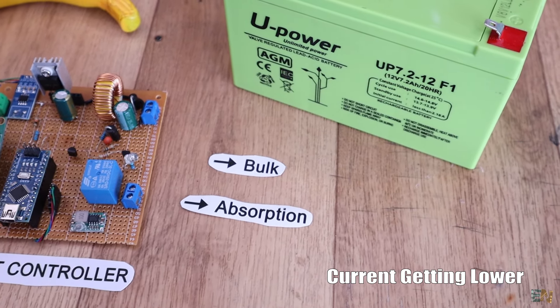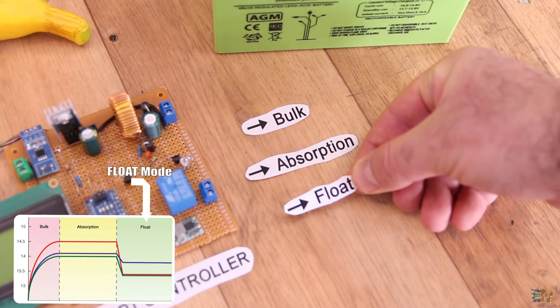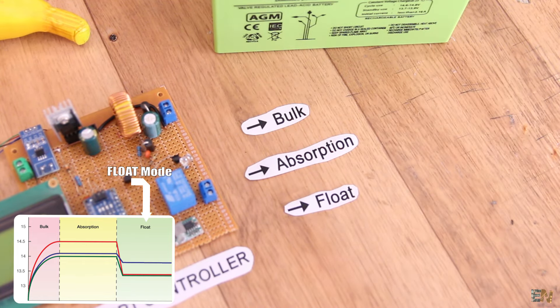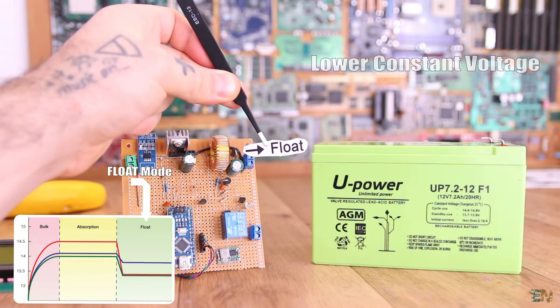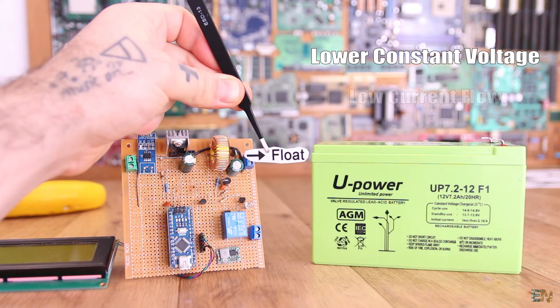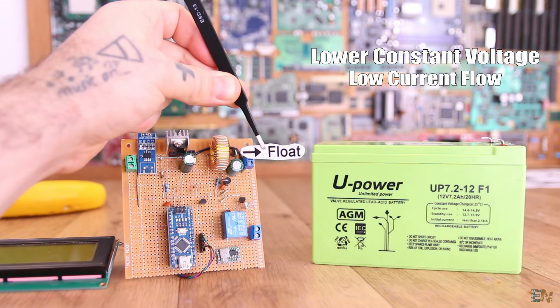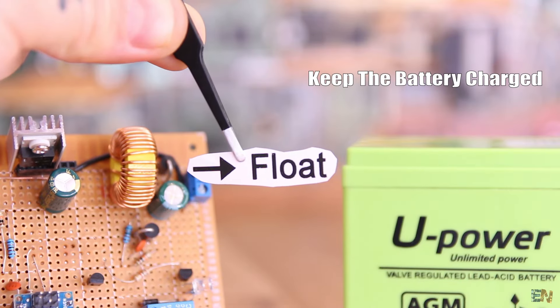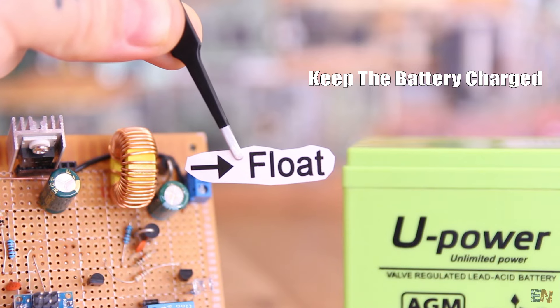When the current flow gets below a certain value, we enter the last stage which is called float mode. In this mode, the controller reduces the voltage to another preset value and keeps the current flow to less than 1% of the battery capacity. This will keep the battery fully charged indefinitely.